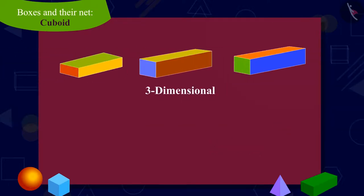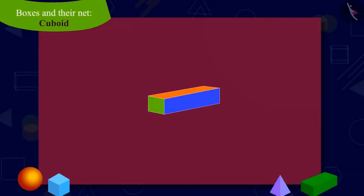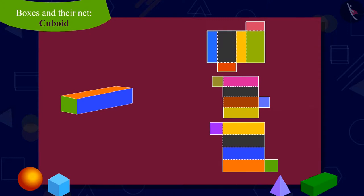Yes, children! Many two-dimensional nets of any three-dimensional shape such as cuboids can be made. We can make any box by folding various types of nets.